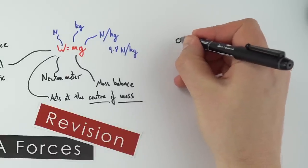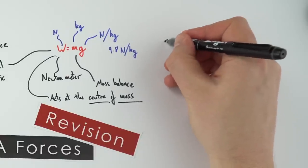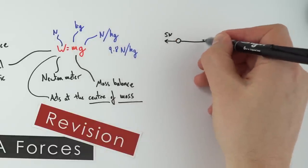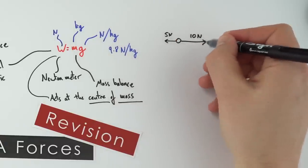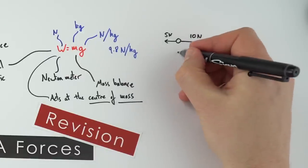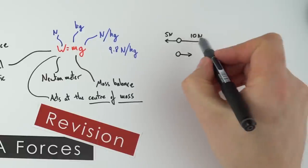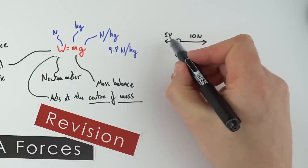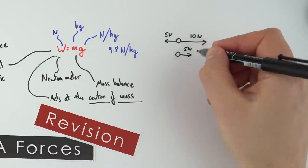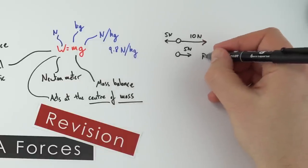If we have an object with a 5-Newton force acting to the left and a 10-Newton force acting to the right, we can replace both arrows with a single arrow showing the overall force. With 10 Newtons one way and 5 the other, there is a 5-Newton resultant force acting to the right.